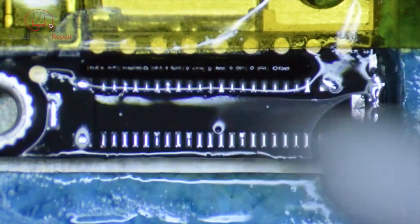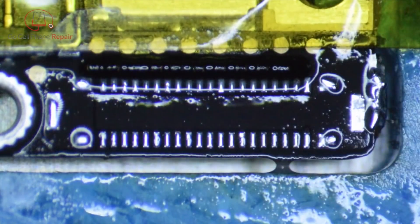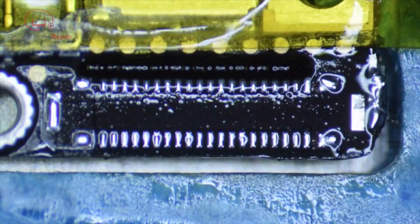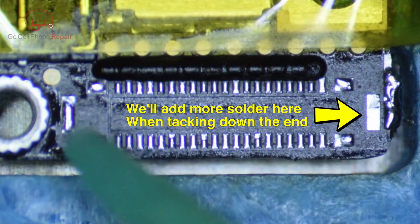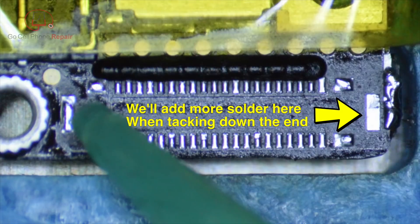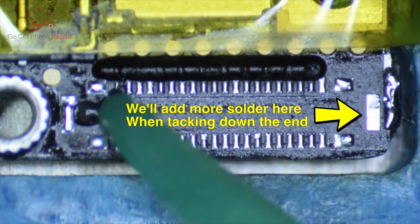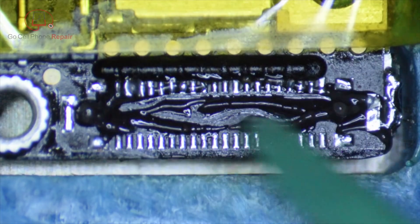All right, so we'll clean it up with the rubbing alcohol one more time. That's looking a little better than it was before. Get some more flux onto the surface. This is going to not only allow us to solder this down, but also kind of assist in holding things in place.